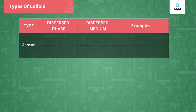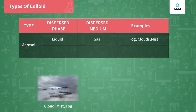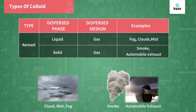The first type is aerosol. If the dispersed phase is liquid or solid, and the dispersion medium is a gas, this is known as aerosol. For example, clouds, fog, and mist are all aerosols because there is always a liquid dispersed in a gas. Fog is nothing but liquid droplets present in air. For solid in gas, the example is smoke and exhaust — the carbon particles which are solid are dispersed in air. So smoke and exhaust are types of aerosol.